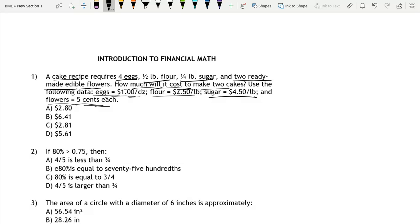So this sounds like a pretty simple problem. If a cake requires four eggs, let's first find the price of one cake, right? We know all of this information about the cake, so let's find the price of one cake.